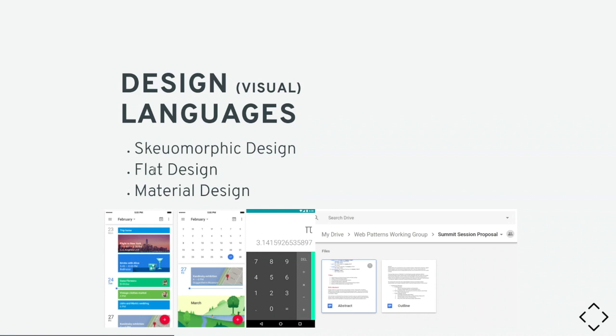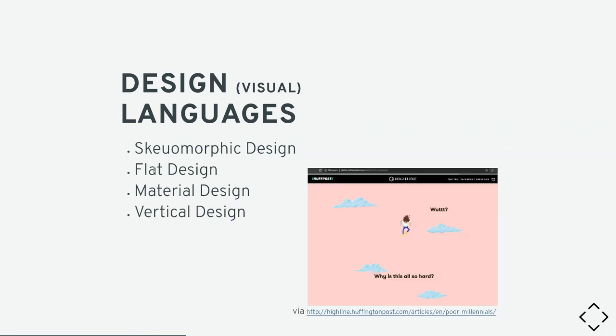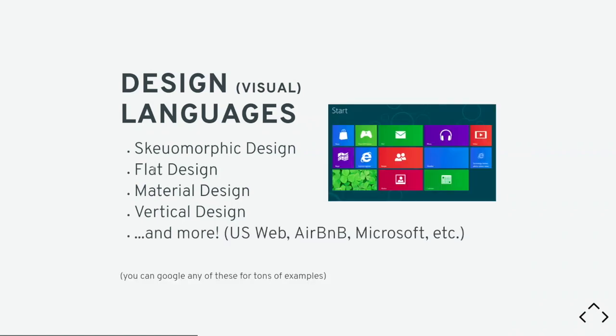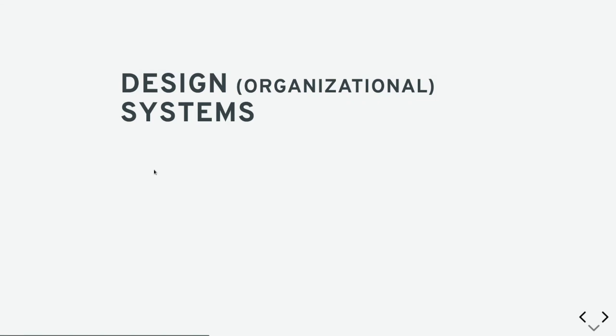Material design is Google's approach — while flat design is clean, it lacks contextual information like depth and texture. Beyond these, there are many other visual design languages: Microsoft's systems, vertical design, the Airbnb design system. All of these are visual design languages you can Google for inspiration when building your own design system.